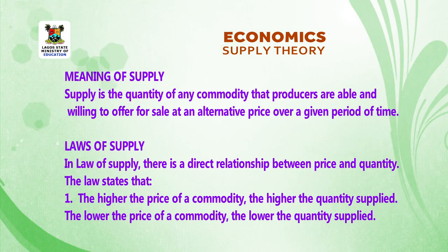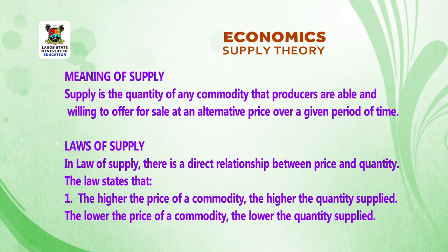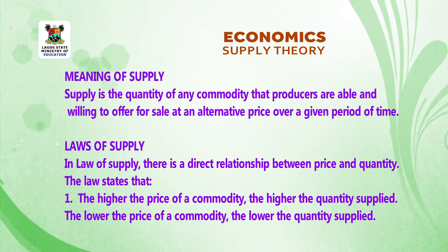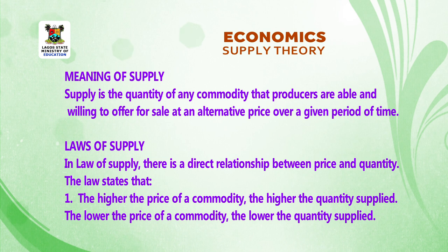Meaning of supply: Supply is the quantity of any commodity that producers are able and willing to offer for sale at alternative prices over a given period of time. Laws of supply: In the law of supply, there is a direct relationship between price and quantity. The law says that the higher the price of a commodity, the higher the quantity supplied.